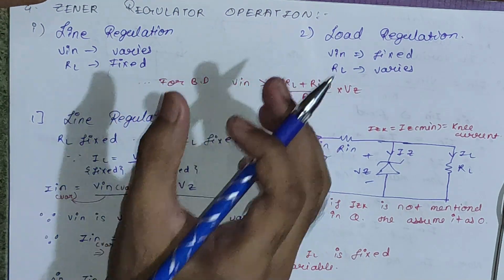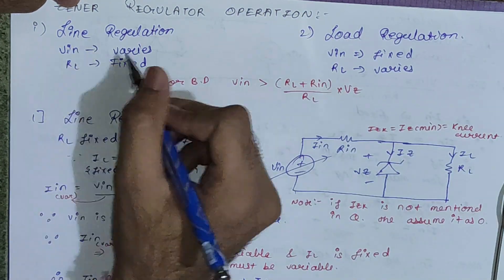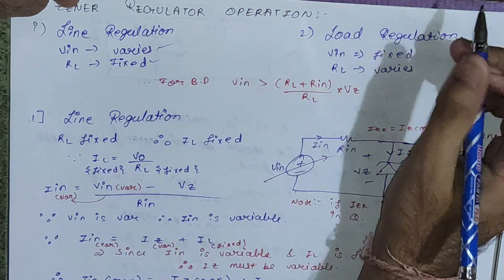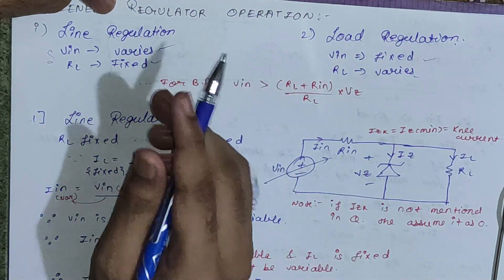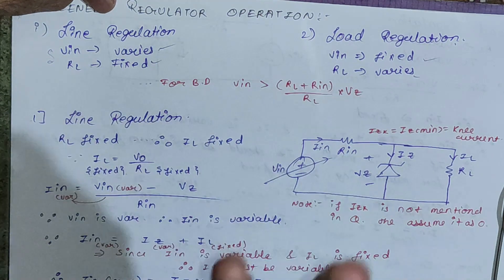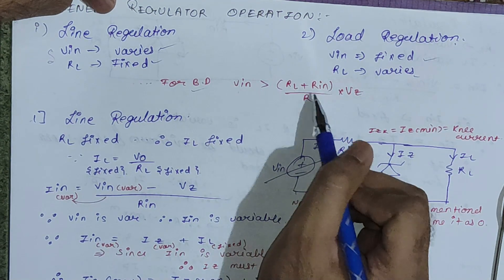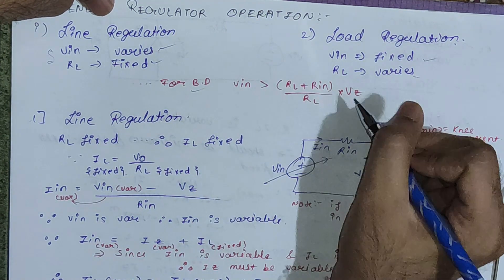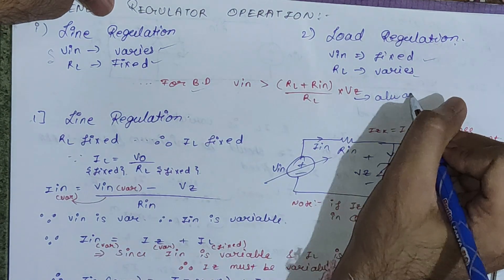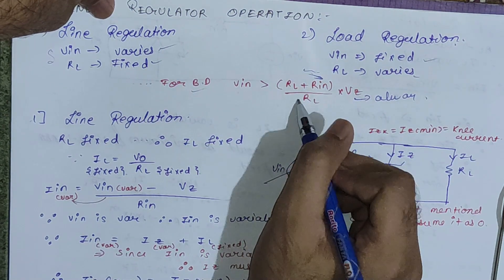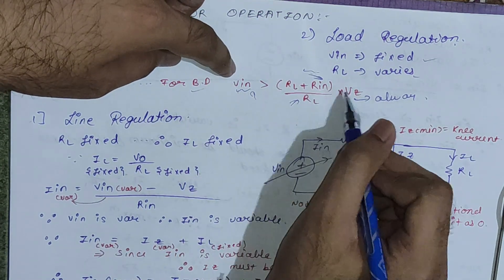Now let's see the actual Zener regulator operation. Regulation is divided into line regulation and load regulation. In line regulation, the input voltage varies while RL is fixed. In load regulation, RL varies while Vin is fixed. Note that Vz is always fixed once the Zener diode is manufactured, and Rin is also fixed. Only RL and Vin vary, which is why we consider only these two parameters.